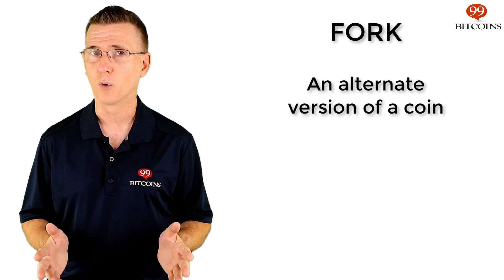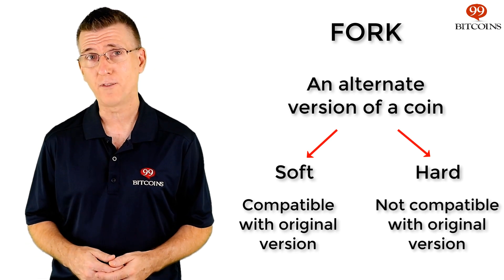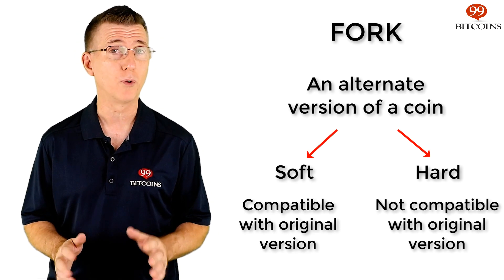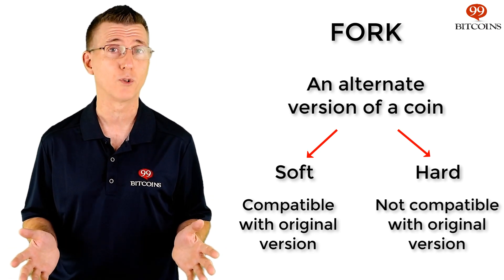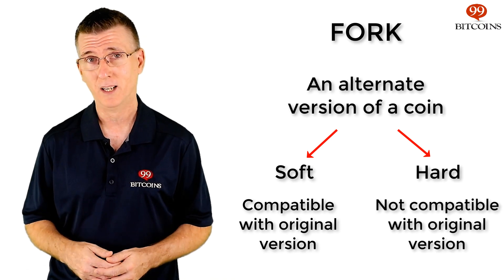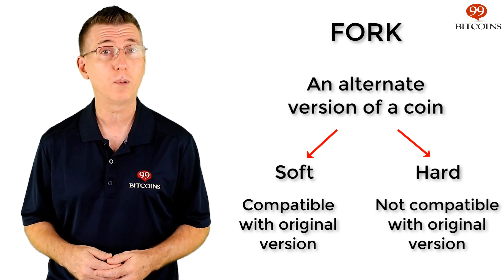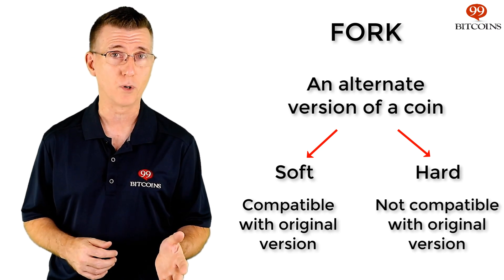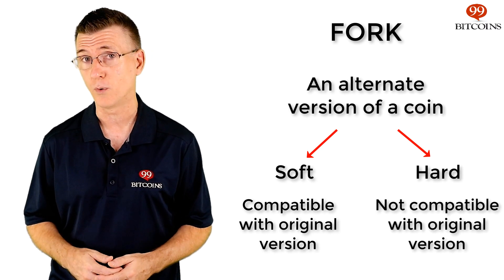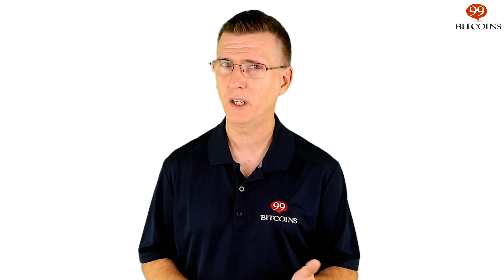A fork can be described as an alternate version of an original coin. There are two types of forks: soft forks and hard forks. Soft forks are versions that will work well with both the original version and the alternate version of the coin, so as a user you can choose which version to run without a lot of concern. Hard forks, on the other hand, don't play well with the original version. This means that you need to choose whether to update your software to run the alternate version or to stick with the original one. With hard forks, if the alternative is not accepted by 100% of the users, then a sort of split will occur on the network and a new coin will emerge — one that is similar to the original, but not identical.